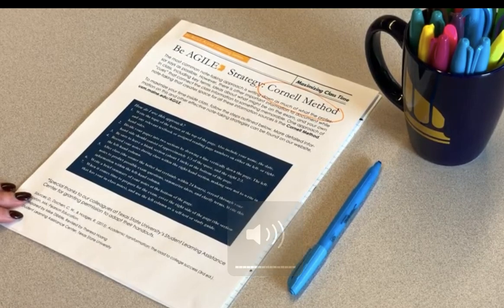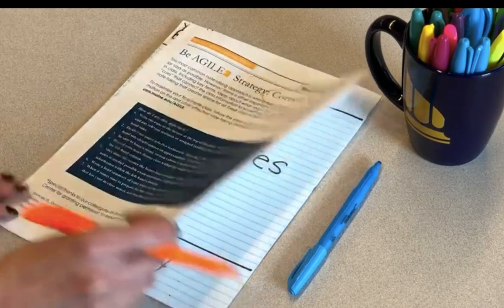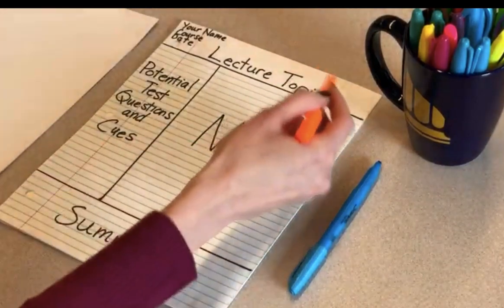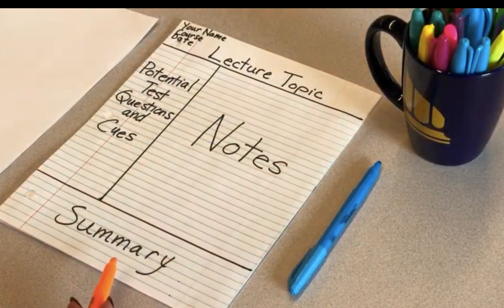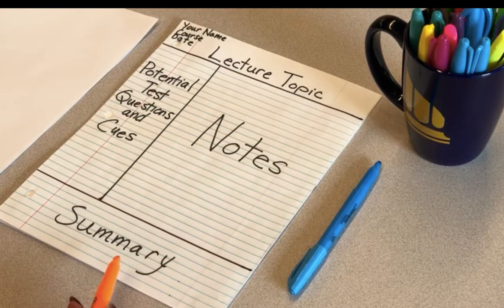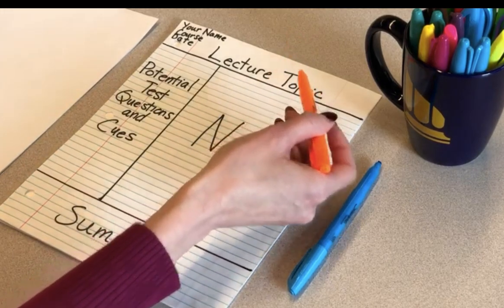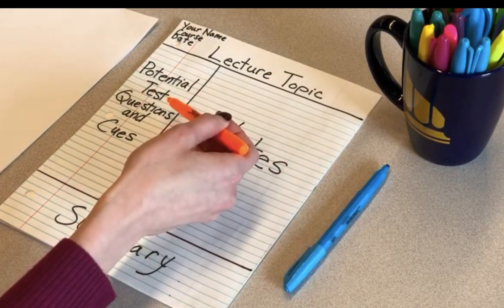The Cornell method differs from other methods in the page layout. The page is divided into four sections, and each section has a specific purpose: topic and date, notes, questions and cues, and summary.